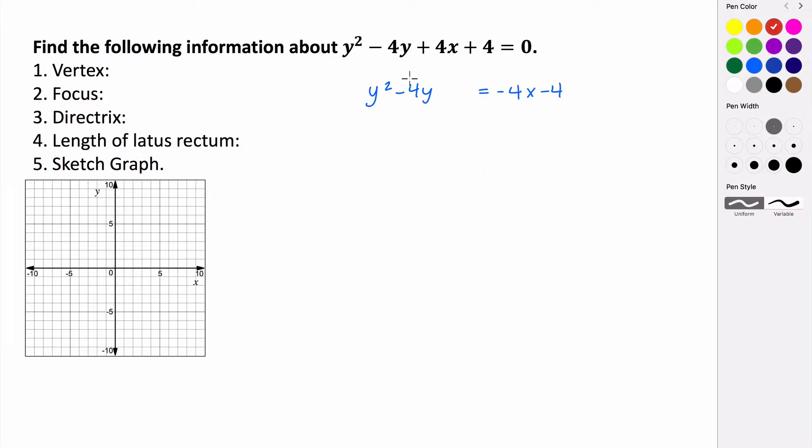So now we complete the square on the y's. So take your negative 4 divided by 2, which is negative 2, and square that. So negative 2 squared is positive 4. So we're going to add 4 to both sides.